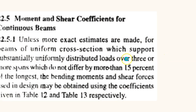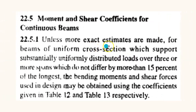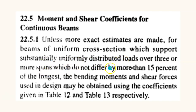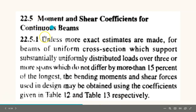Let's look at clause 22.5.1, which refers to that table. It says that unless more exact estimates are made, for beams of uniform cross-section, substantially uniformly distributed loads over three or more spans, the table applies. There are many conditions the table alone doesn't tell you: your beam has to be of uniform cross-section, it should have substantially uniformly distributed loads, it should have three or more spans, and the spans should not differ by more than 15 percent. If these conditions are not met, the formula in that table may not work.